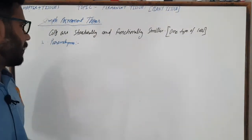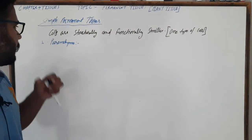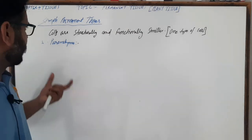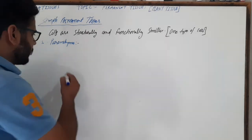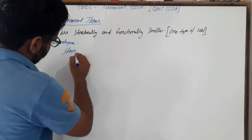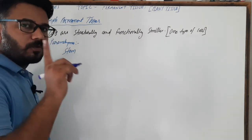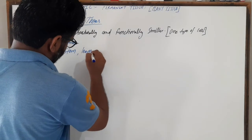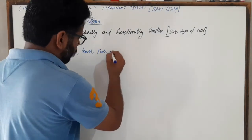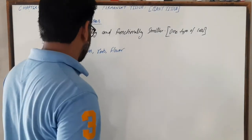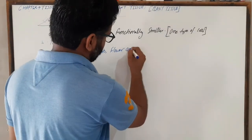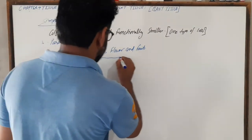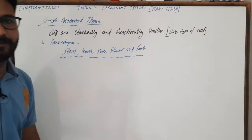Now we start parenchyma. If we talk about the occurrence of parenchyma in a plant — where parenchyma can be present — it can be found in stem, roots, leaves, flowers and fruit. This is the occurrence of parenchyma.